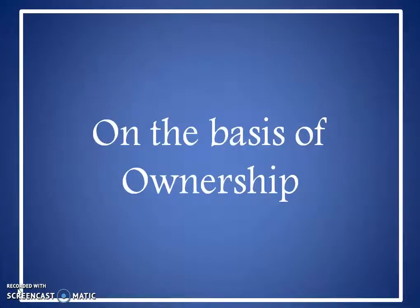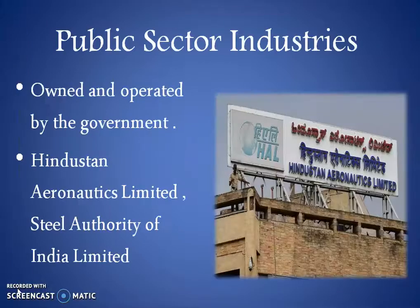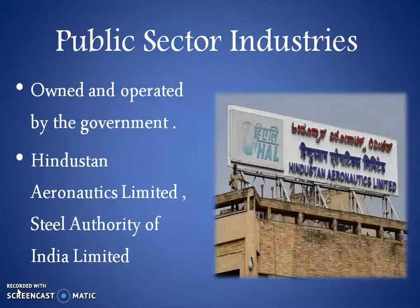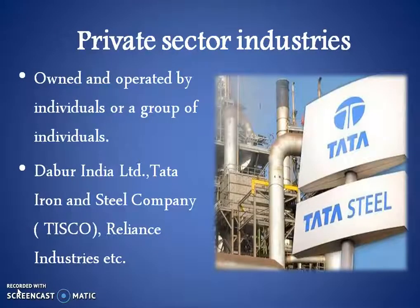On the basis of ownership, industries can be classified as: First, public sector industries. Such type of industries are owned and operated by the government. For example, Hindustan Aeronautics Limited and Steel Authority of India Limited.